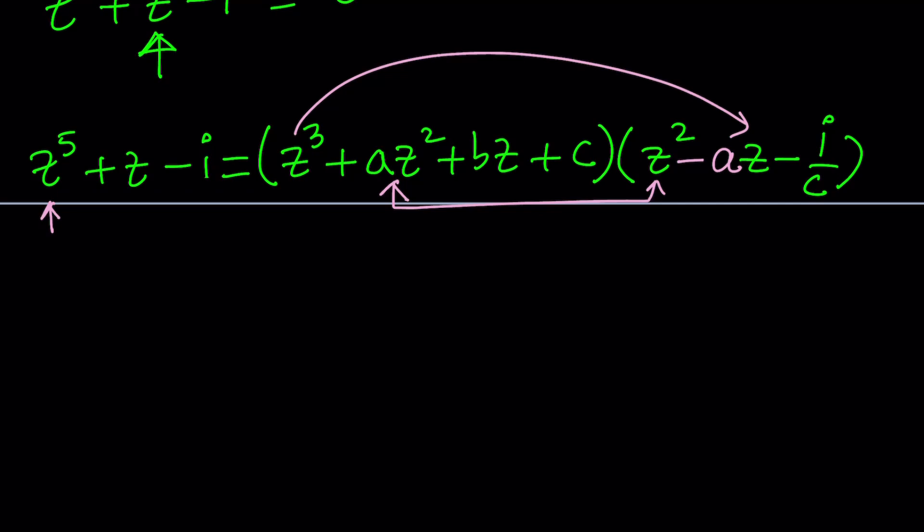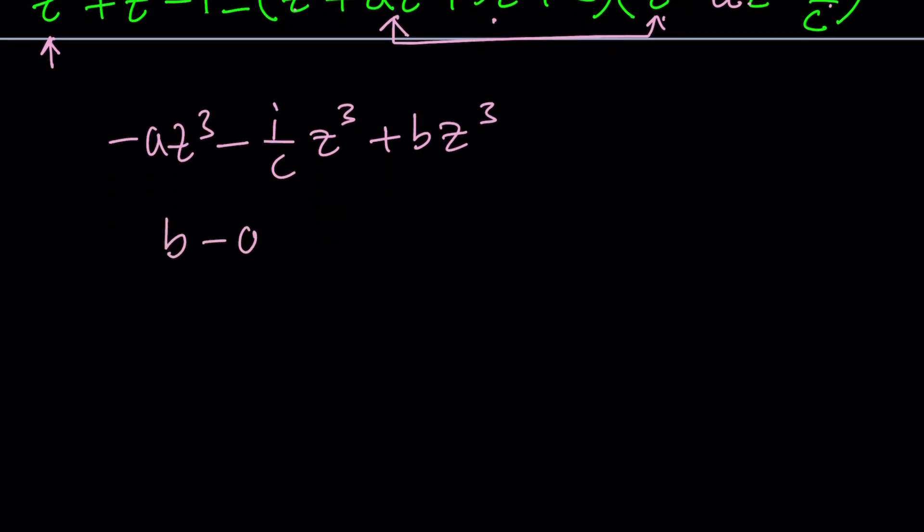So how do you get a z cubed? I multiply Az squared by negative Az, so that's negative Az cubed. And then another way to get z cubed is multiply the z cubed by negative i over C. That's going to give you negative i over C z cubed. And then there's one more way to get a z cubed, which is Bz and z squared. And that's going to be Bz cubed. If you take out the factors B minus A minus i over C, that'll be the coefficient of z cubed. And guess what? There's no z cubed here either, so the coefficient of z cubed must be zero, which gives us an equation. That's going to give us one equation.